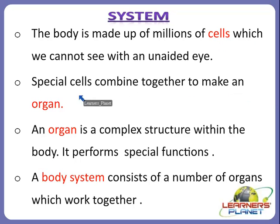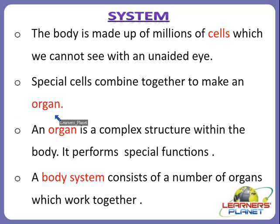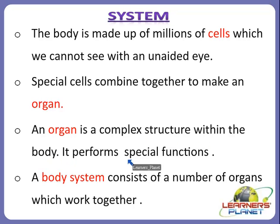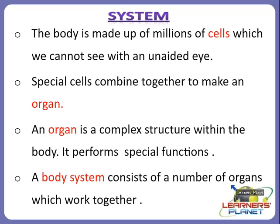These special tiny cells combine together to make an organ. An organ is a complex structure within the body which performs special functions. This organ system, or the body system, is formed which consists of a number of organs which work together and perform many functions.